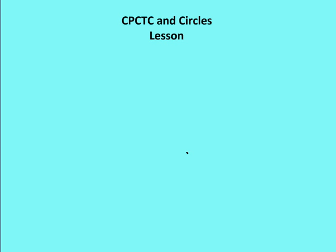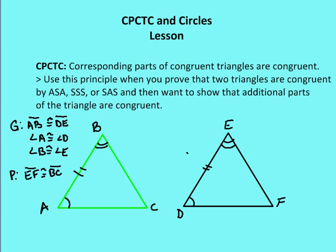CPCTC is another portion of geometry which we'll use quite frequently. It's an acronym that stands for Corresponding Parts of Congruent Triangles are Congruent. That means if I have two triangles that I've shown congruent by, let's say, the SSS Postulate, the ASA Postulate, or the SAS Postulate, then I can also say that the other parts of the triangle that I haven't yet proven congruent are congruent.